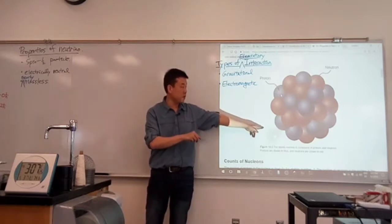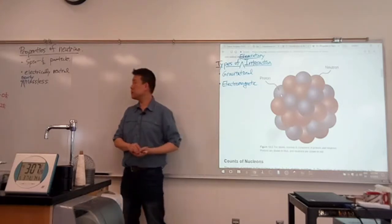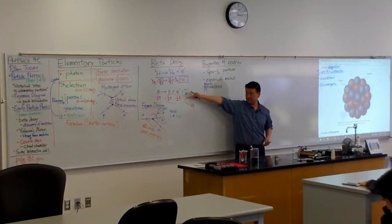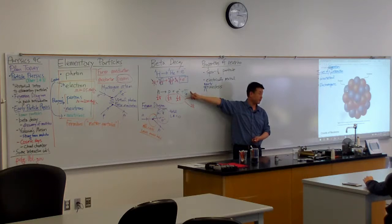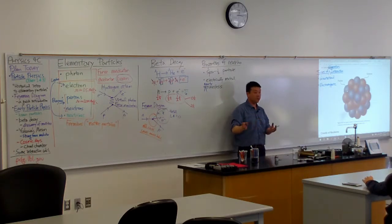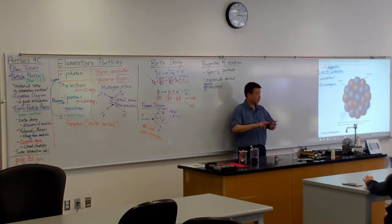So this is a very strong interaction. If this neutrino participated in that strong interaction, then we would have detected it, electrically neutral or not, because it would have interacted with the other atomic nuclei around it and we would have somehow seen it.